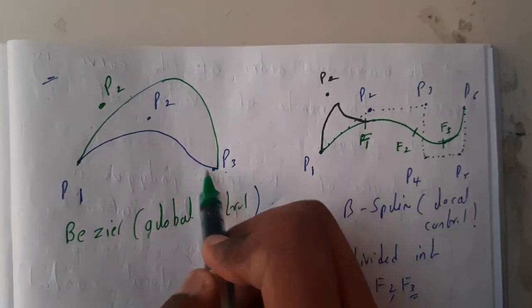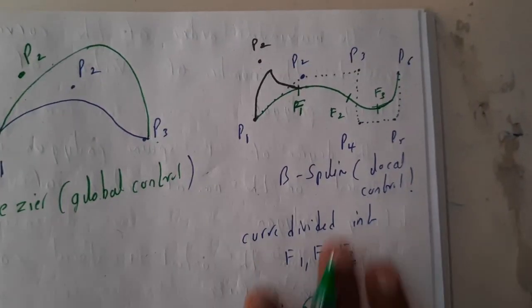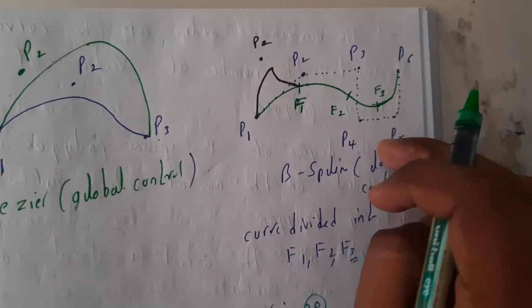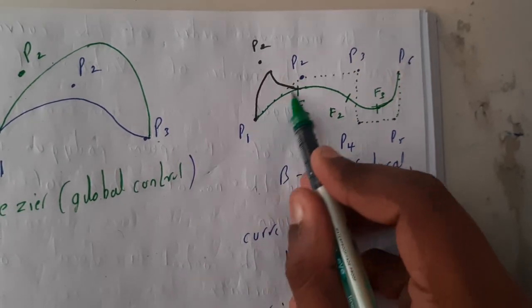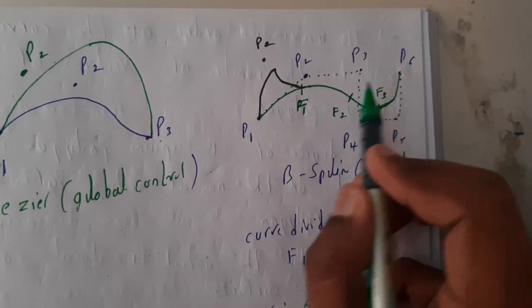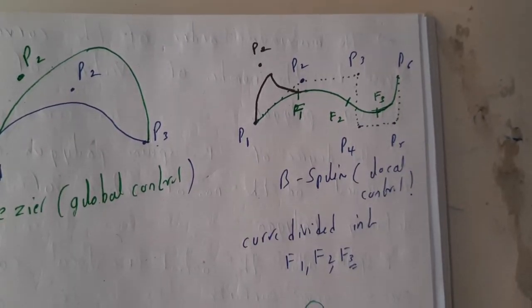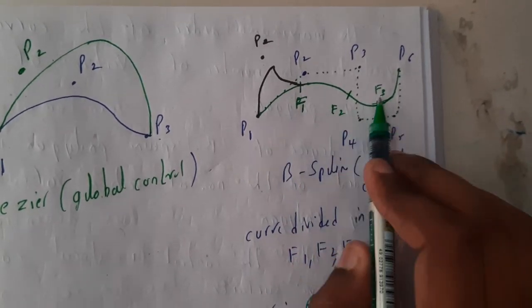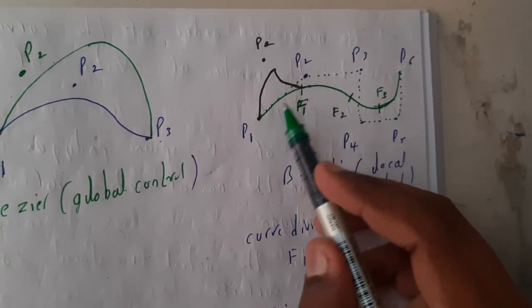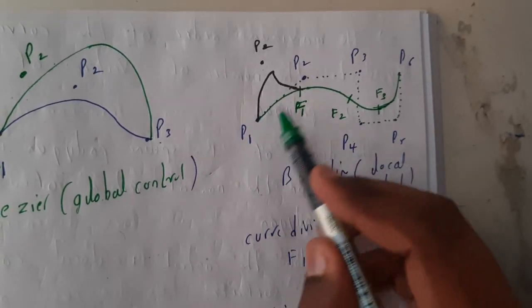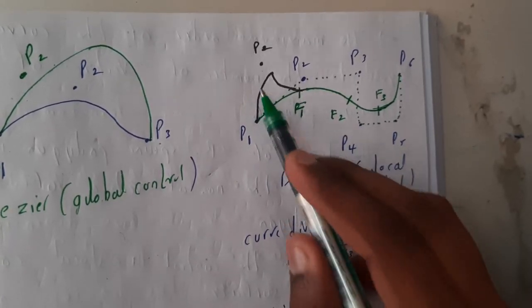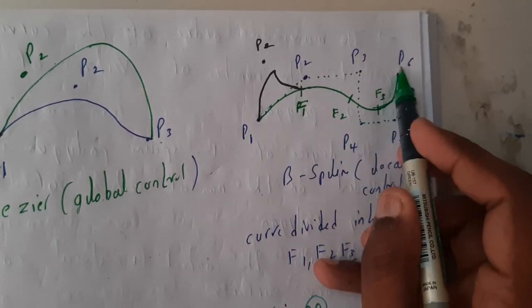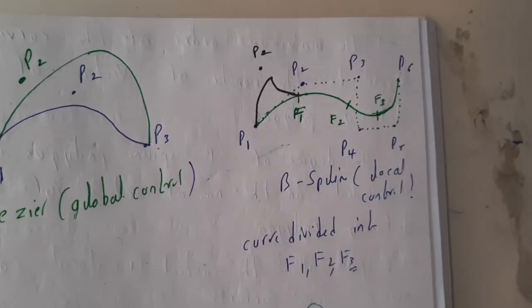Whereas in B-spline, we have P1, P2, P3, P4, P5, and P6. The curve is divided into particular slots or frames. Till here it is F1, till here is F2, till here is F3. If a point from P1 to F1, if anything changes in this region, only this curve will be affected. The rest of the curve will be as usual. This is B-spline with local control.